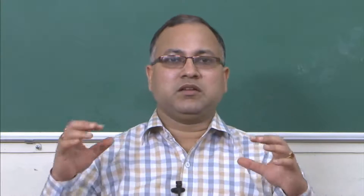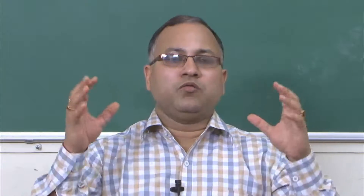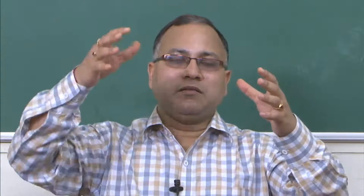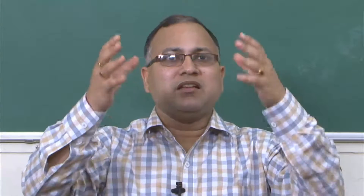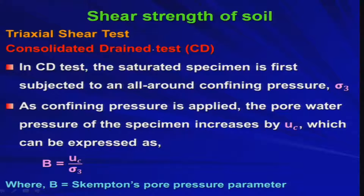The cell water applies pressure in the radial direction, and that will eventually become one principal stress — the minor principal stress. So first, we take the saturated soil specimen and that saturated soil specimen is subjected to an all-round confining pressure sigma_3.